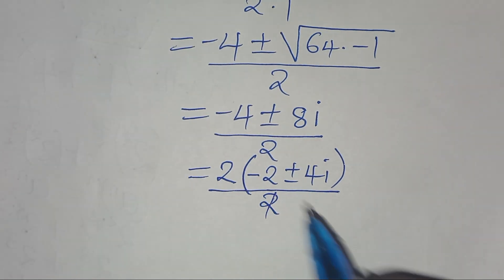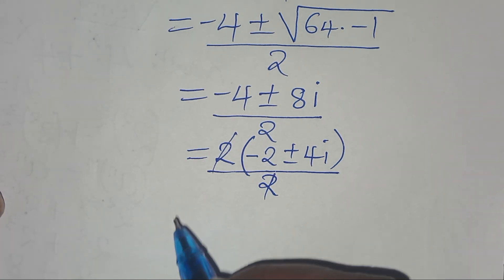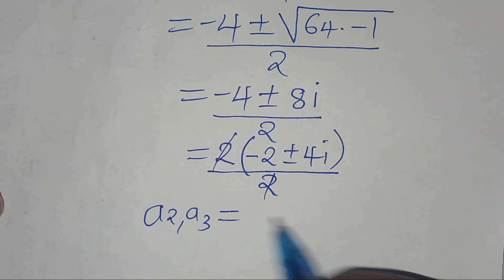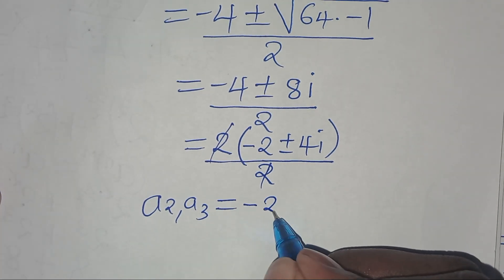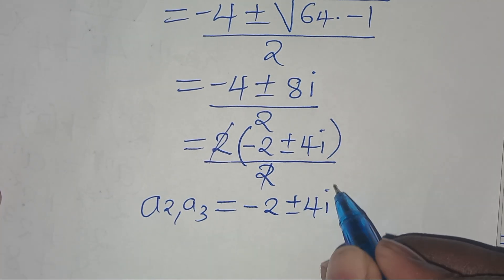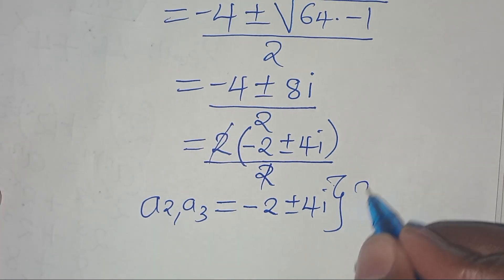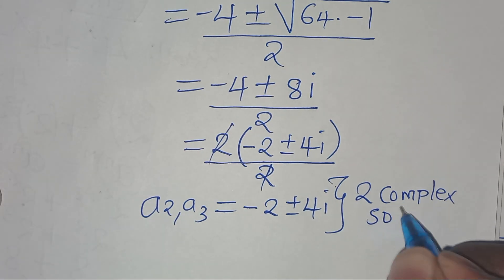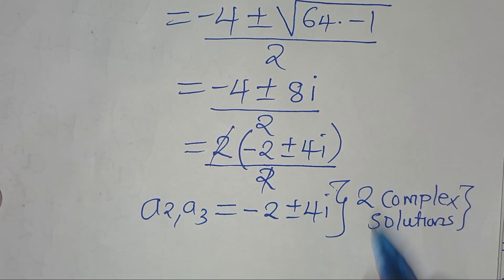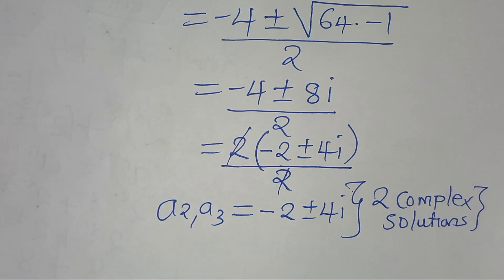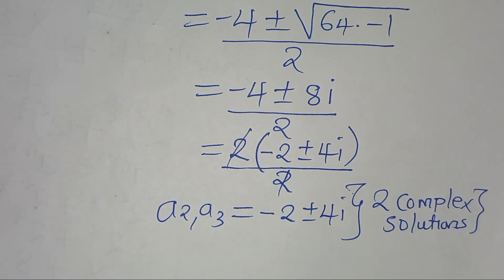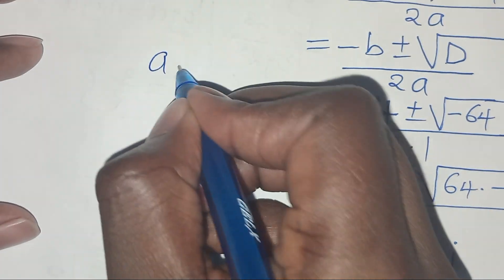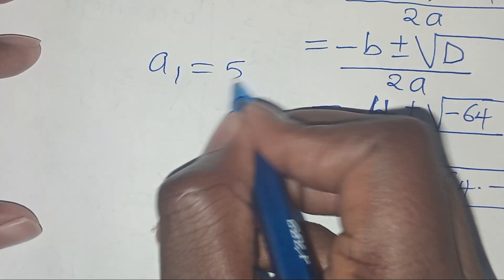Simplifying, we have that a₂, a₃ is equal to minus 2 plus or minus 4i. So essentially, these are the two complex solutions to this algebra problem. We only have one real solution, which is a₁ equal to 5.